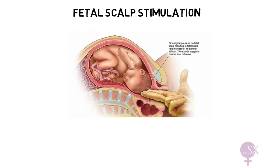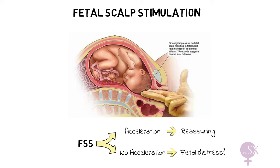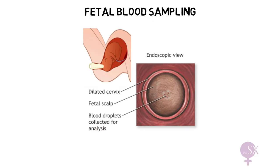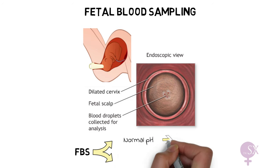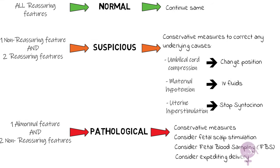Fetal scalp stimulation is when firm pressure is applied on the fetal head. In a healthy baby this will result in an acceleration on the CTG and is reassuring, but if no acceleration is observed that is a sign the baby may be in distress. Fetal blood sampling involves obtaining a fetal blood sample from the fetal scalp; pH is worked on the sample to assess the level of fetal acidosis and indicate whether we can wait or if the fetus is acidotic and delivery needs to be expedited.